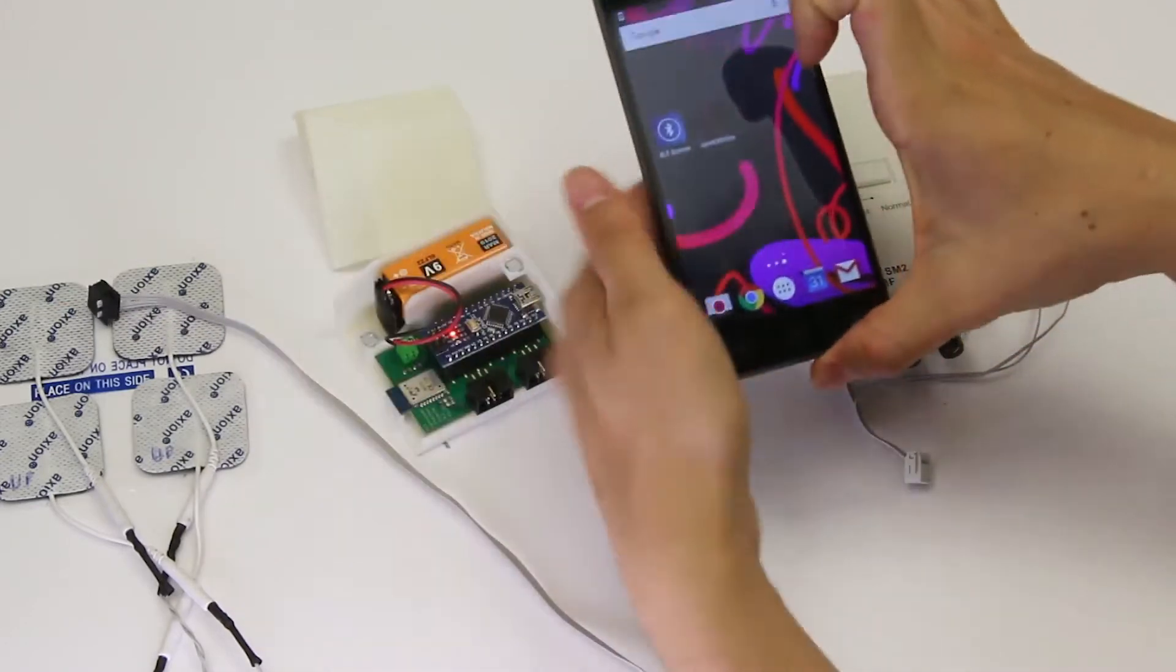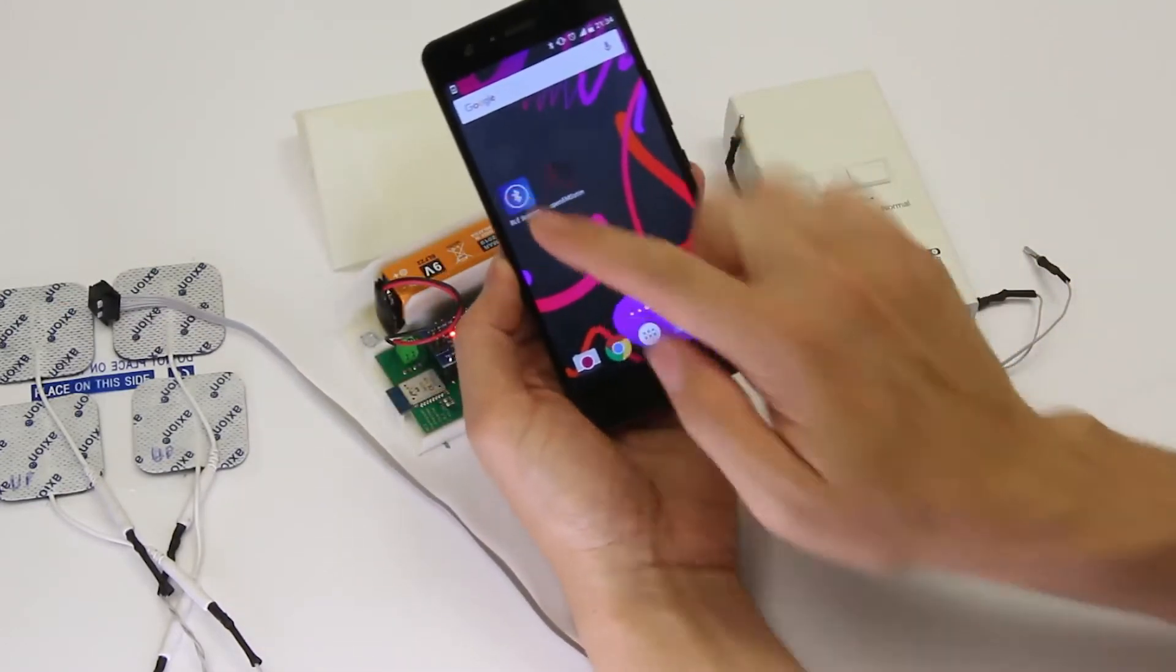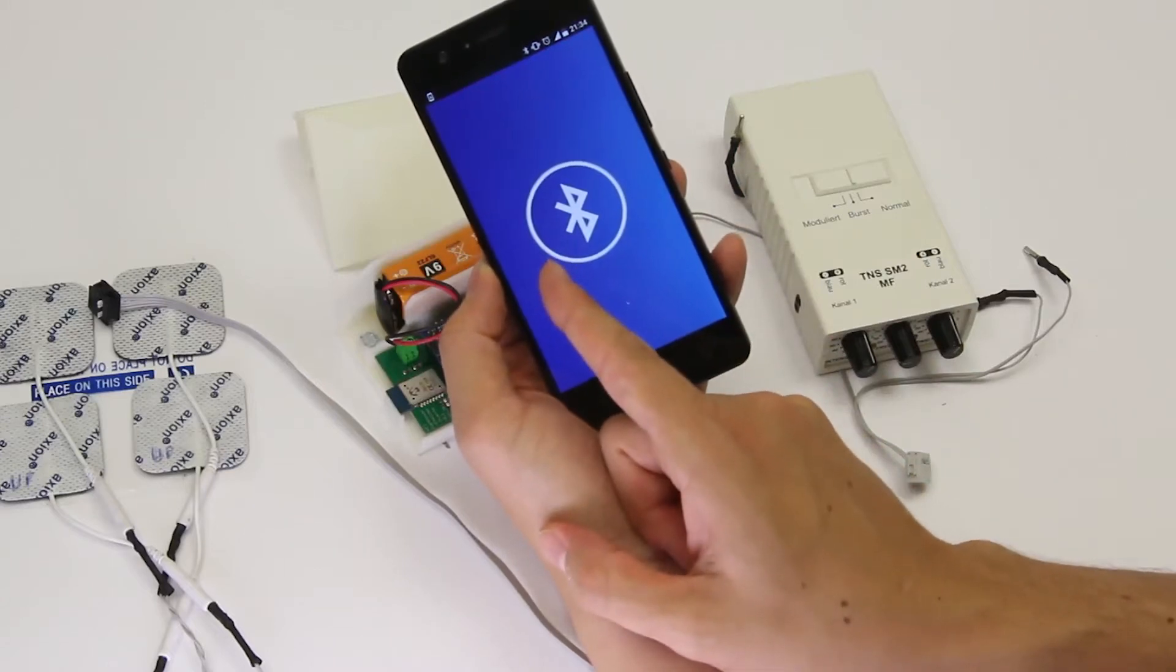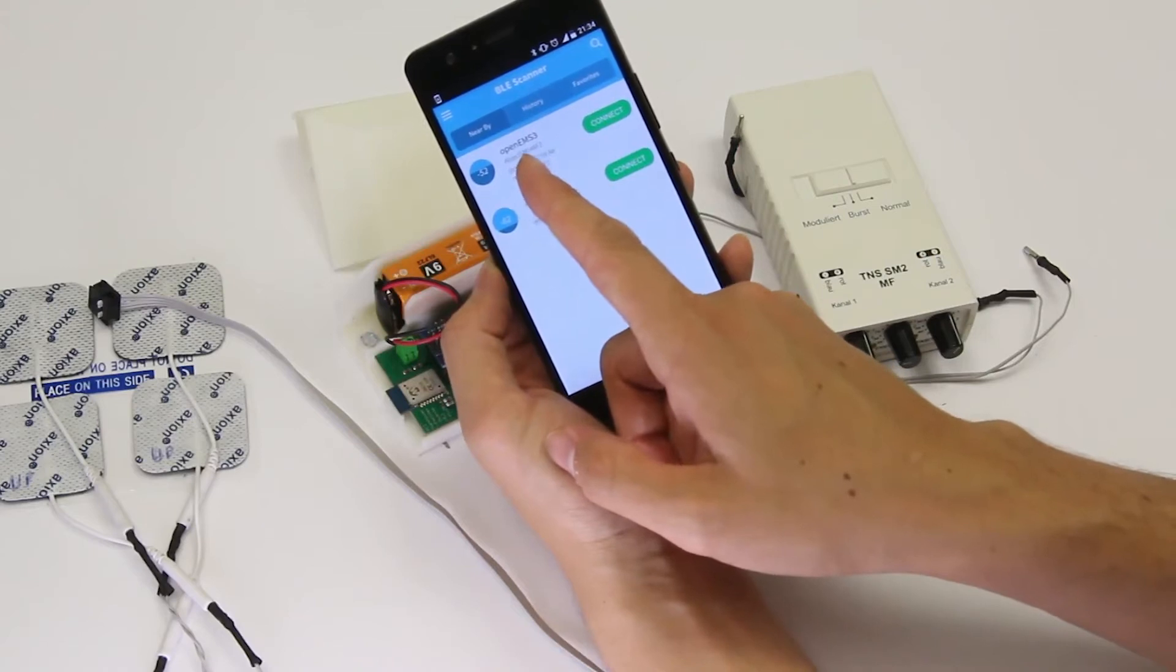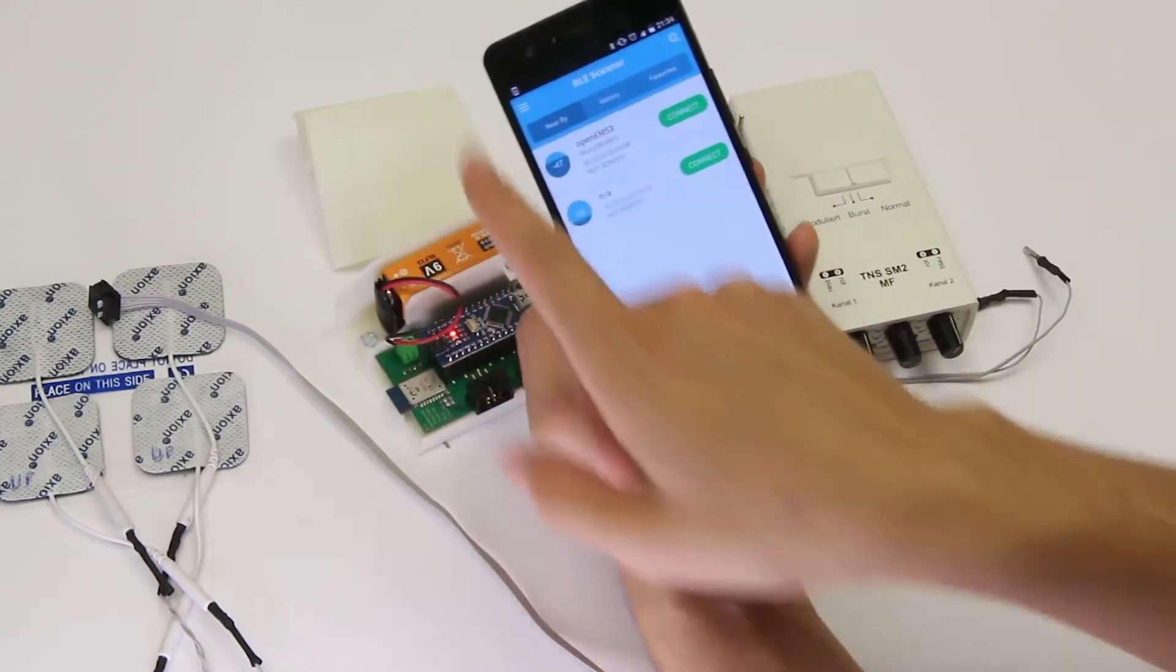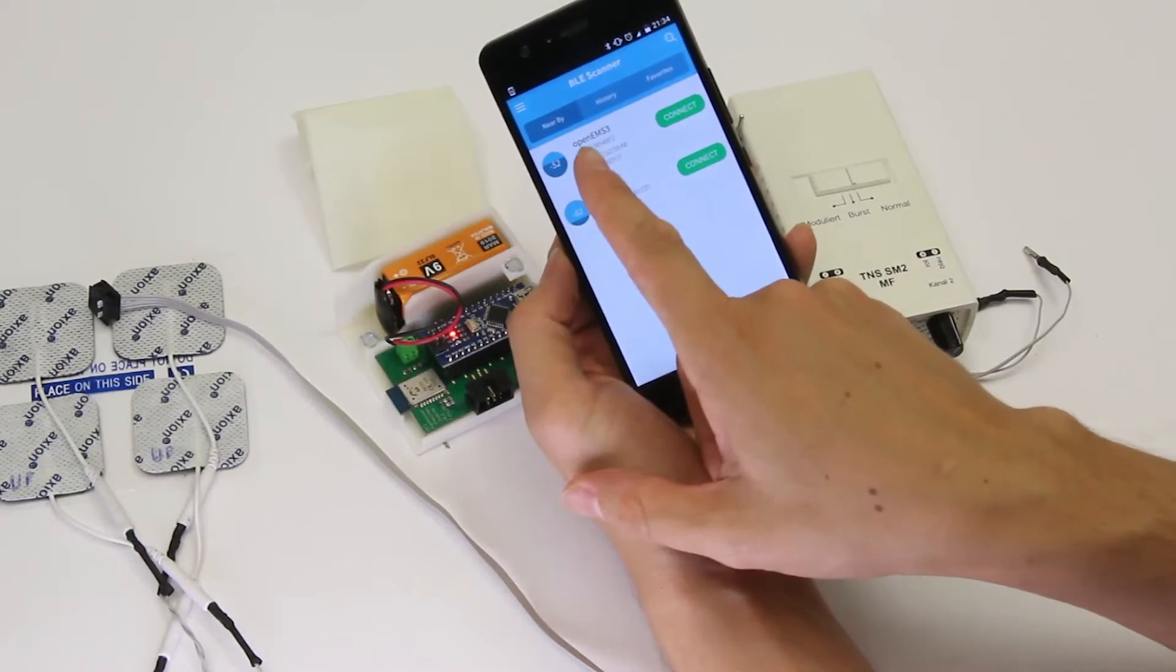I'm here on my Android phone starting an app called BLE Scanner, Bluetooth low energy scanner. This is something that I got from the Google Play Store. As you can see it scans the surroundings and it finds a board called OpenEMS3.